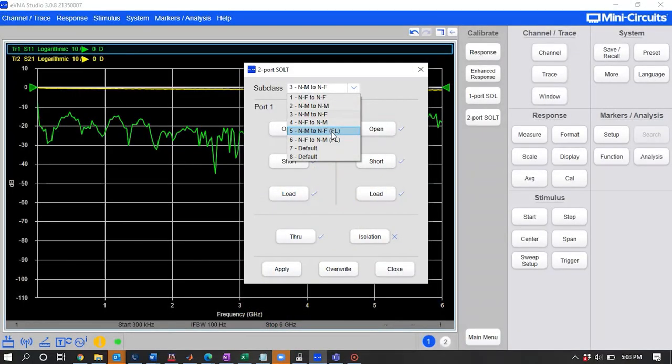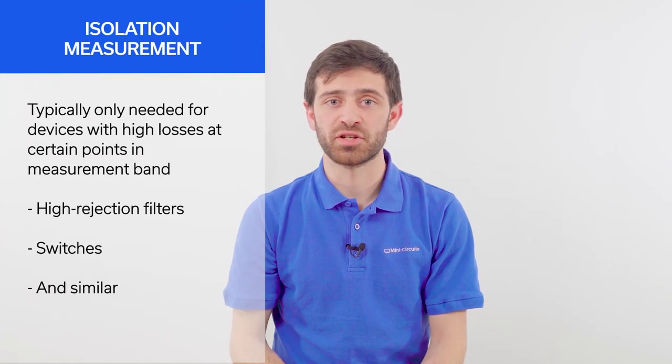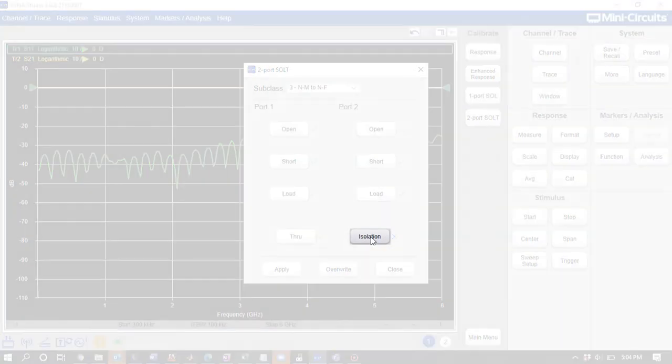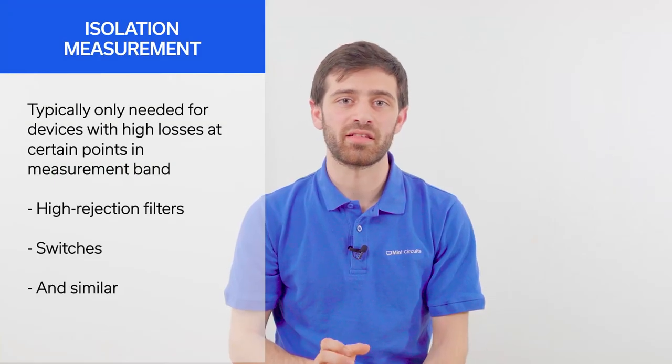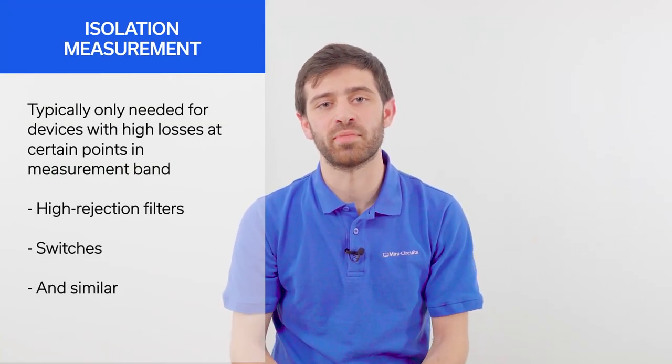Those subclasses are denoted with an FL in the drop menu. We can make the isolation measurement by terminating both ports and taking the measurement. Note that the isolation measurement is optional and should only really be used for DUTs with high losses at some points in the measurement band, like some high rejection filters or switches in the off position.